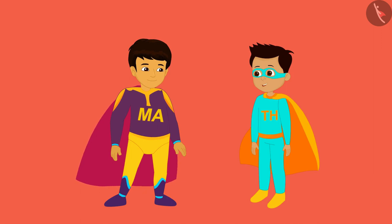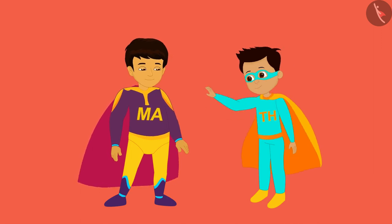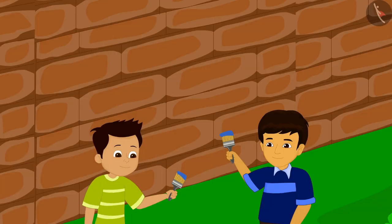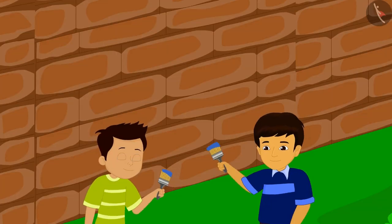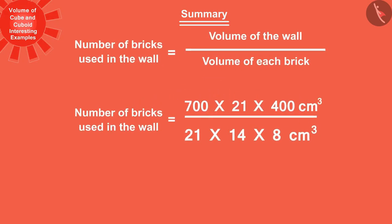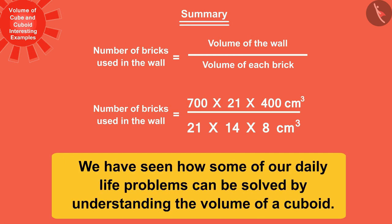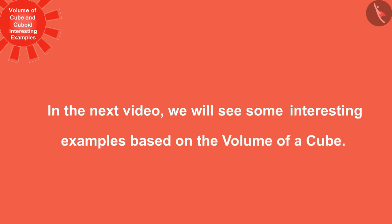Let us now return to our world and paint this wall with a beautiful color, which will make it look more beautiful. The two friends together painted the wall in a beautiful blue color. With this example, we have seen how daily life problems can be solved by understanding the volume of a cuboid. In the next video, we will see some interesting examples based on the volume of a cube.